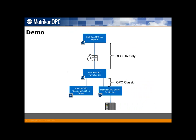This is the demo architecture. I have here two OPC classic servers: the Matrikon OPC Simulation Server, which supports OPC DA, and the Matrikon OPC Server for Modbus, reading data from a PLC. I'll show you first how I'm reading data from an OPC classic client, then we'll configure the tunneler to make that data available for an OPC UA client application — effectively converting these two OPC servers into UA.